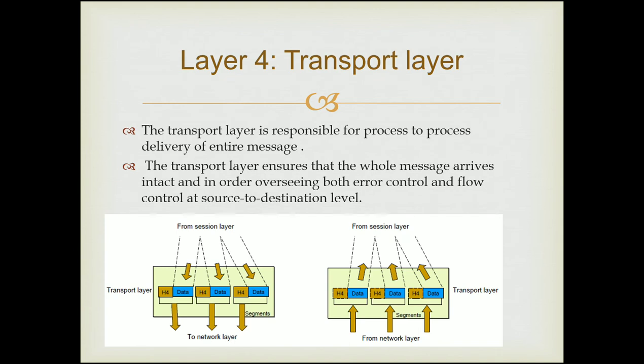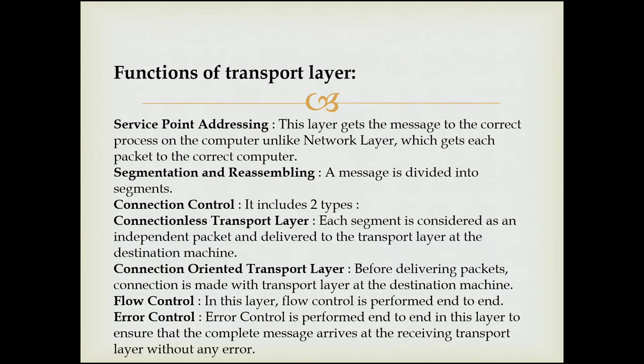The fourth layer is the Transport layer. The Transport layer is responsible for process-to-process delivery of the entire message. It ensures that the whole message arrives intact and oversees both error control and flow control at source-to-destination level. The responsibilities of the Transport layer include: service point addressing, segmentation and reassembling, connection control, flow control, and error control. Service point addressing: this layer gets the message to the correct process on the network, unlike the Network layer which gets each packet to the correct computer.